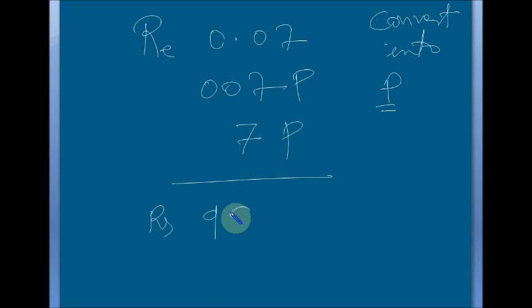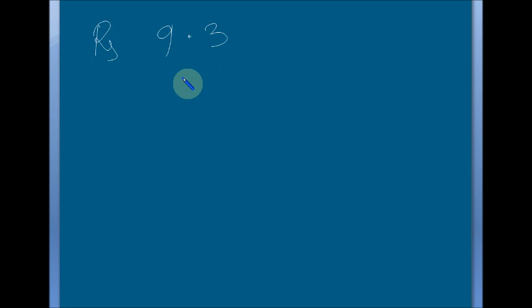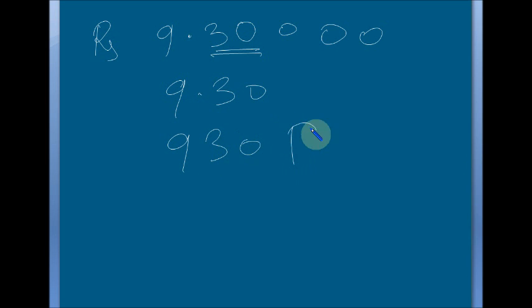Second example: Rupees 99.26 into Paise — just omit the decimal, it becomes 9,926 Paise. If it is Rupees 9.3, convert into Paise. Keep in mind that Paise must always be in two digits. The right side of the decimal is only one digit, so add a zero to make it two digits: 9.30. Omitting the decimal gives 930 Paise.